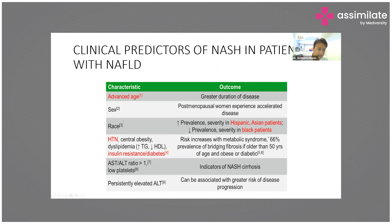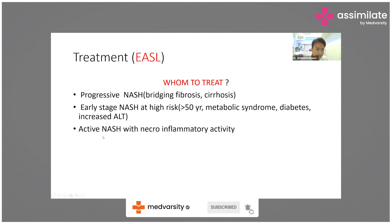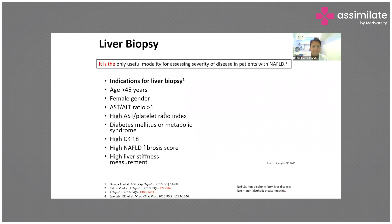Persistently elevated ALT is associated with greater risk of disease progression. These are checklist items to be thoroughly evaluated in patients with fatty liver. Whom to treat: patients with progressive NASH, early-stage NASH with high-risk features, or active NASH with necroinflammatory activity on biopsy. Liver biopsy remains the only useful modality for assessing severity in NAFLD.